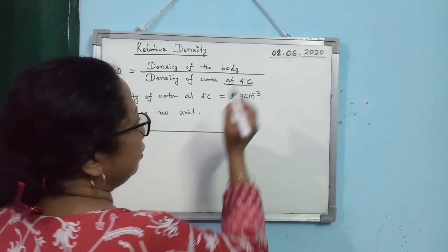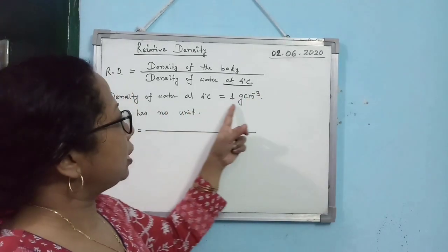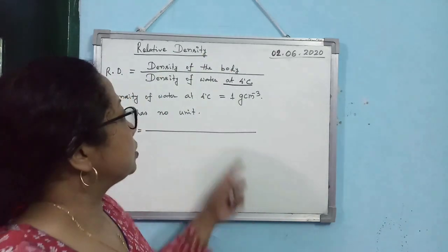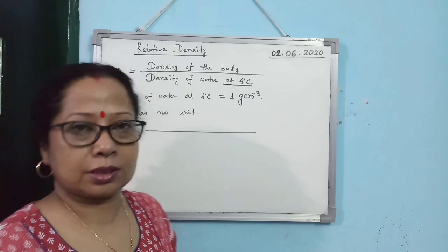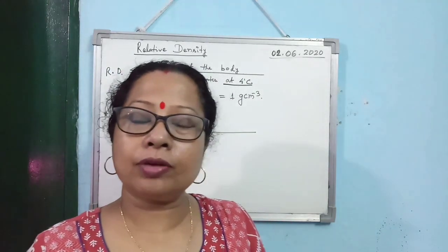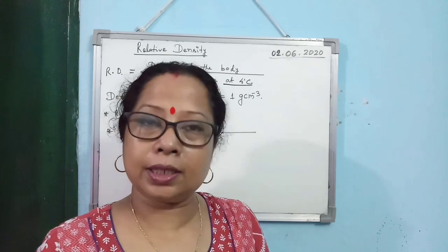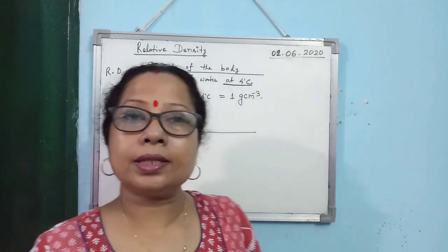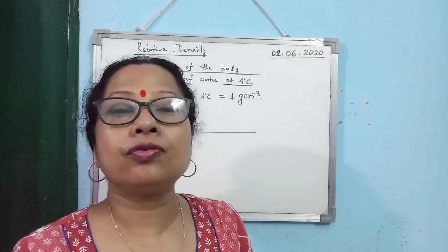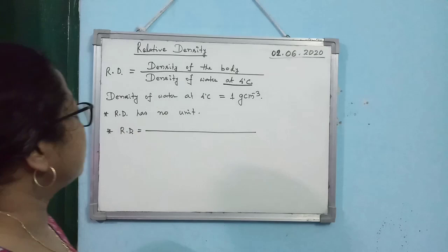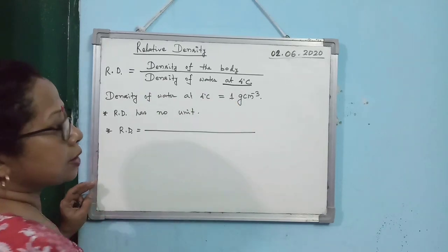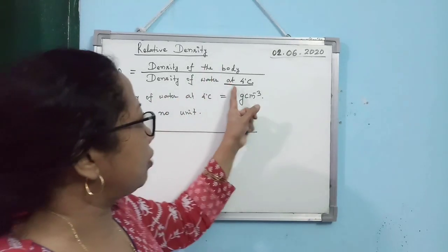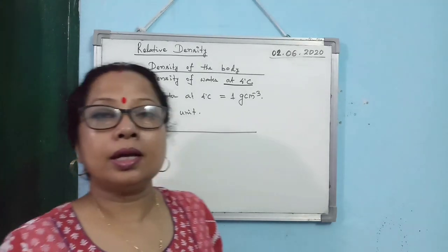This is important. Why? Because the density of water at 4 degrees Celsius is 1 gram per centimeter cube. You have to mention this because the density of water changes when you change the temperature — for different temperature ranges, density of water changes. Since both the density of the body and density of water at 4°C have the same unit, relative density has no unit.